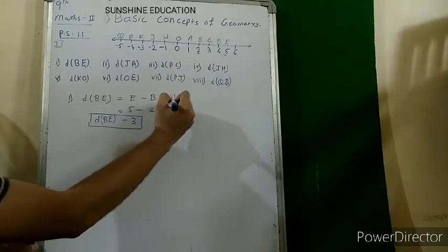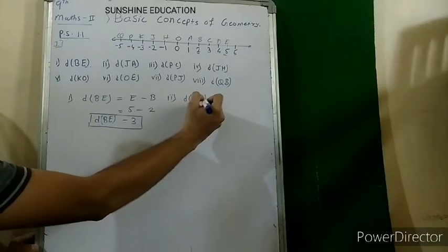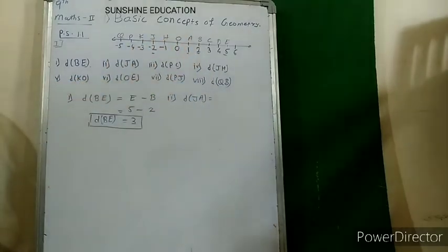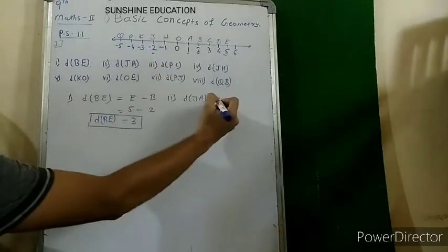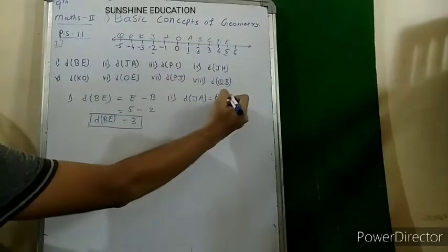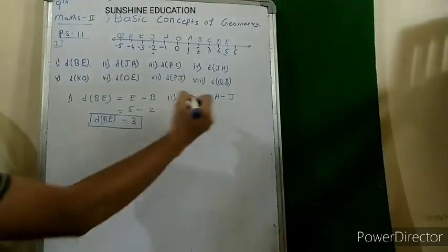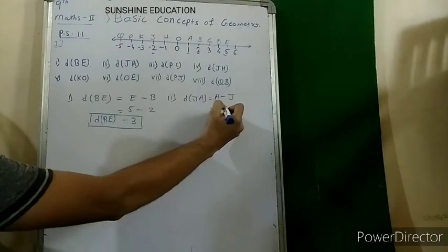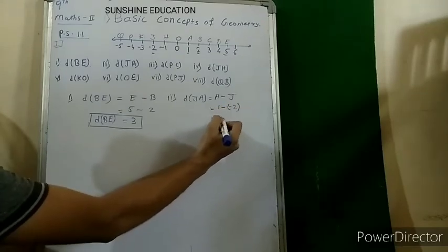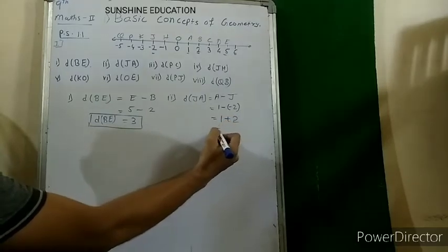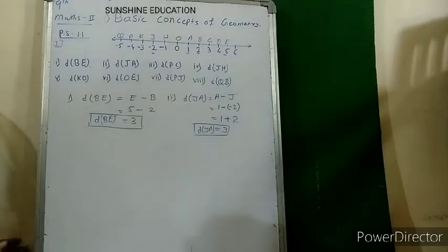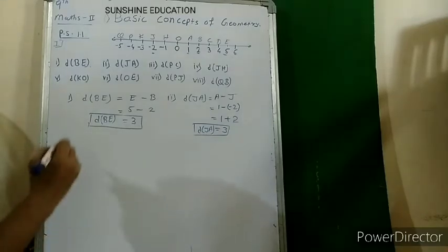The second question: distance JA. Looking at J and A, A is at the right-hand side so A is bigger. We subtract bigger minus smaller: A minus J. The coordinate of A is 1 and the coordinate of J is minus 2. So 1 minus (minus 2) = 1 plus 2 = 3 units. Remember, minus times minus becomes plus.